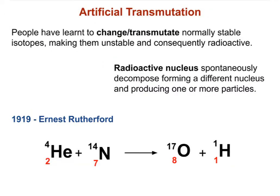As humans, we dislike when something happens without our involvement, so we invented artificial transmutation — when we take a stable, normal isotope and change it to make it unstable and consequently radioactive. The first experiments regarding this were done by Ernest Rutherford, who was shooting alpha particles into nitrogen-14. When the collision was strong enough, oxygen-17 was created as a result, and a proton was ejected from the collision.